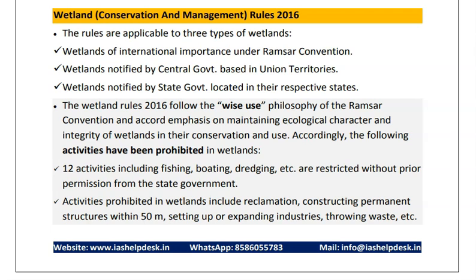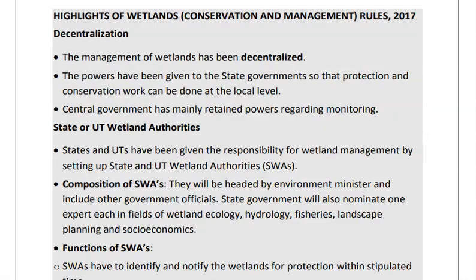In India, the Wetland Conservation and Management Rules 2016 and 2017 have been launched. The highlights of the Wetland Conservation and Management Rules 2017 include that the management of wetlands has been decentralized — the power has been given to state governments so that conservation work can be done at the local level, since one-size-fits-all does not work in wetland conservation. The states and UTs will set up state wetland authorities headed by the environment minister, including other officials and expert members.